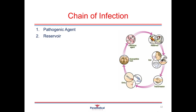The next link is the reservoir — the source where the infectious agent can normally live and multiply. Examples include a human, animal, insect, soil, or any kind of contaminated food or water source. There also needs to be a portal of exit, so the pathogenic agent needs to move from one reservoir source or organism to another. It can exit via things like the respiratory tract, intestinal tract, through sexual contact, open wounds, blood, or bodily fluids.